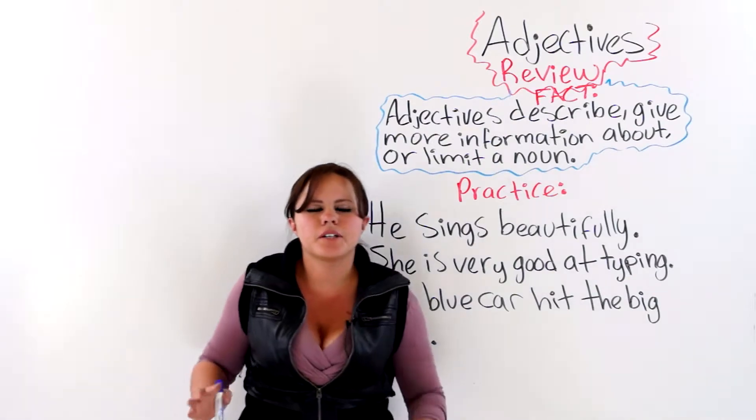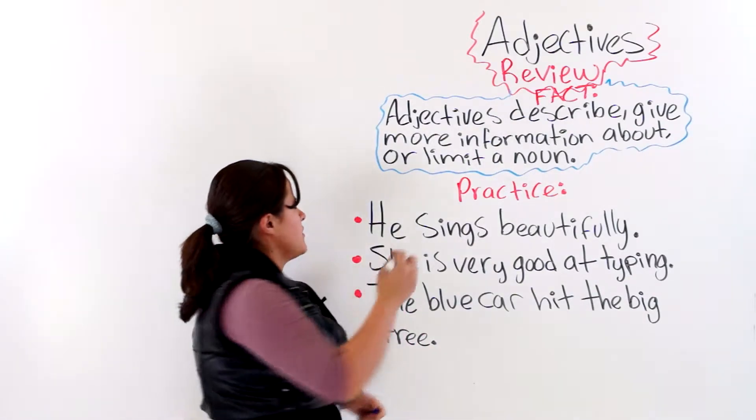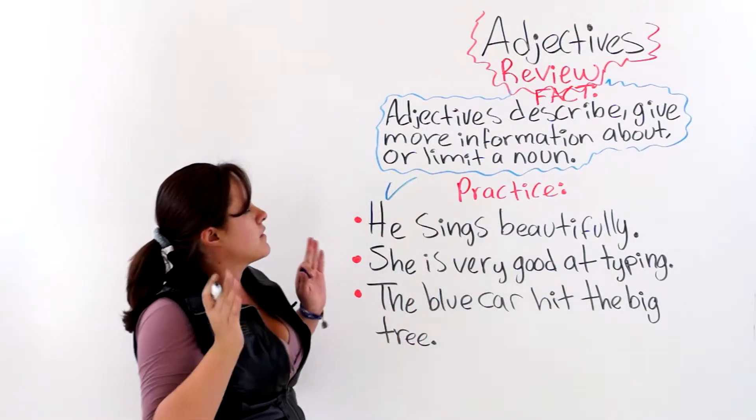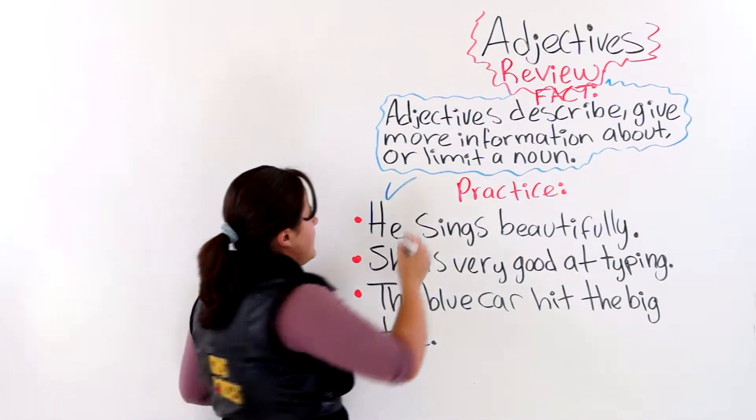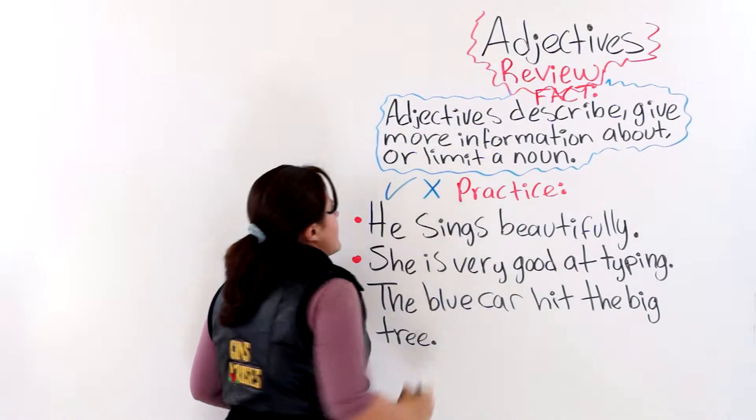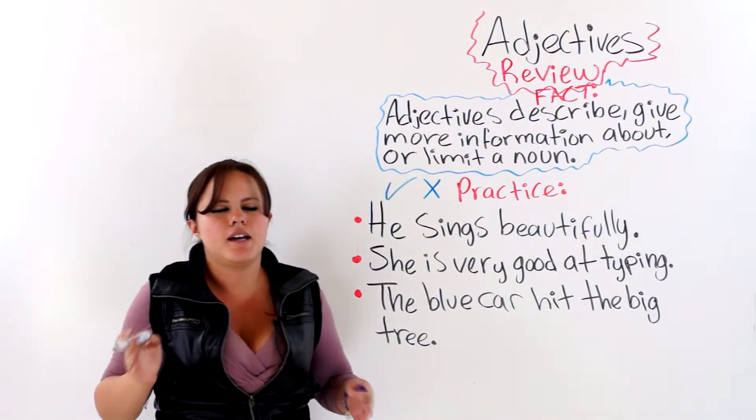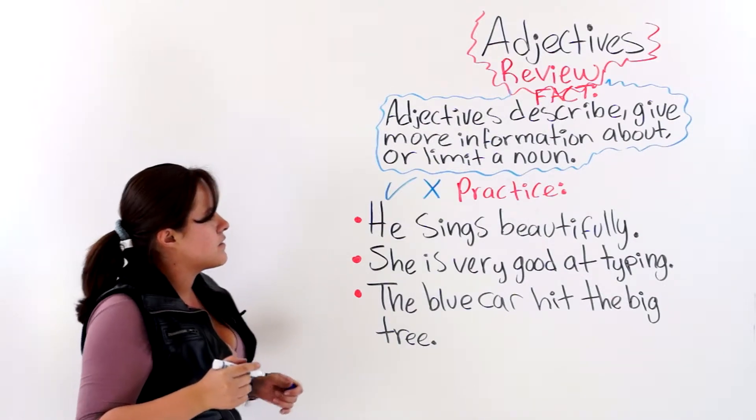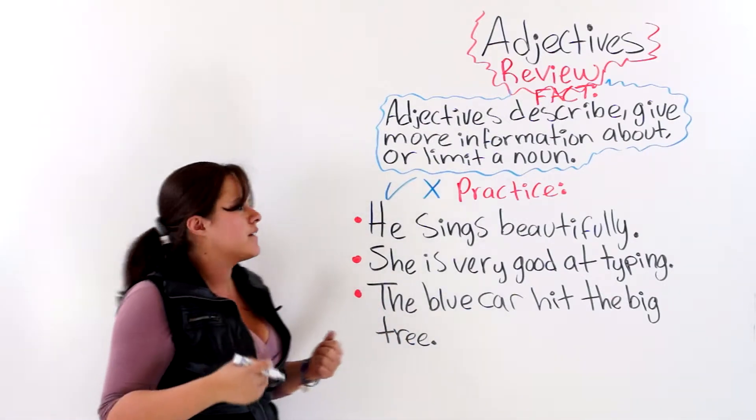Now, you are going to help me tick the sentences that have adjectives and cross out the sentences that do not have adjectives. The first one says, he sings beautifully.